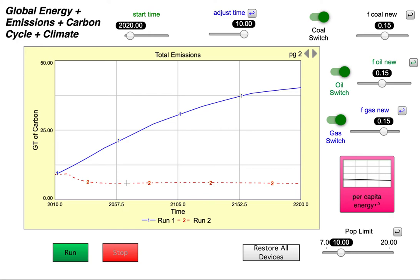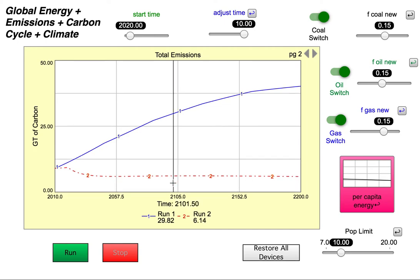You can see that that gives us this emissions history that's more or less stable. So that's staying the same. And you can see what the emissions are in the year 2100. Gets us down to 6.14 gigatons of carbon in the year 2400.